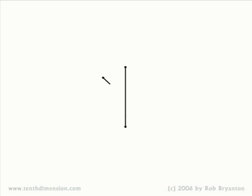If we now take our first dimensional line and draw a second line crossing the first, we've entered the second dimension. The object we're representing now has a length and a width, but no depth. We're going to represent our second dimensional object as being created using a second line which branches off from the first.